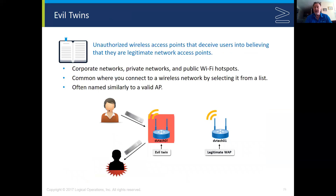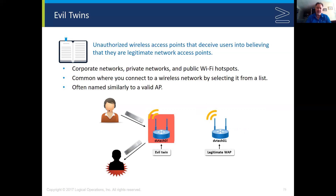The next type of threat to be on the lookout for is called an evil twin. An evil twin wireless access point tries to trick you into thinking it is the legitimate wireless access point. Looking at the slide, we've got our legitimate access point which is 'dv-tech-01' and then our evil twin is 'dv-tech-0!' — this is how an attacker might trick someone into attaching to their evil twin access point so they can gather all the information and see everything you do.